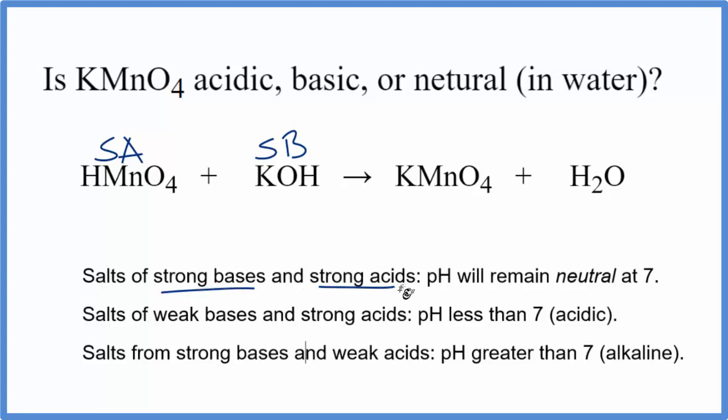According to this rule here, our strong acid and our strong base, when we mix them together, they neutralize. The resulting salt will have a pH that is neutral. It'll be 7 when it's dissolved in water.